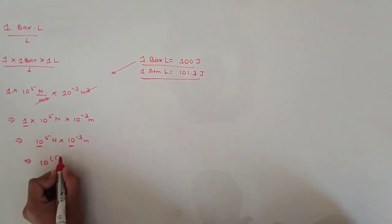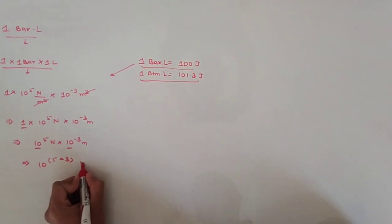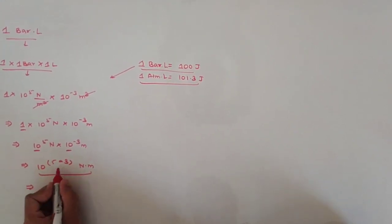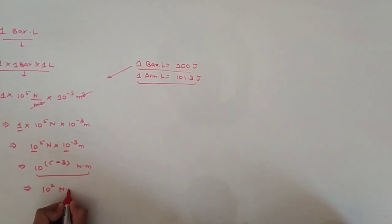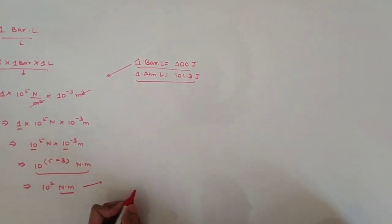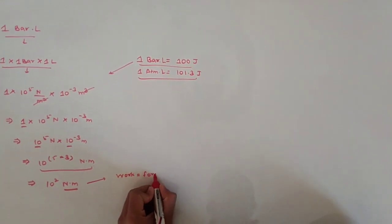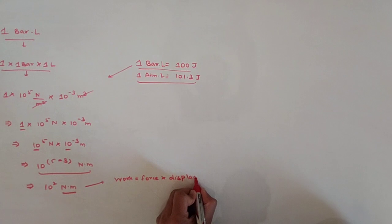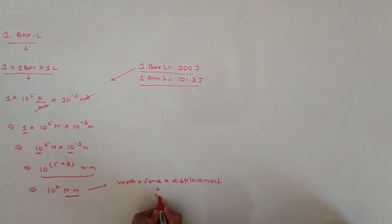So we get 10 raised to the power 5 minus 3, giving Newton·meter. To convert Newton·meter into joules, we recall that work equals force multiplied by displacement.